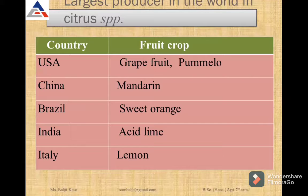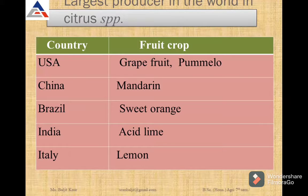These are the countries which are the largest producers of citrus in the world. USA is the largest producer of grapefruit and pomelo. China is the largest producer of mandarin. Brazil is the largest producer of sweet orange. India is the largest producer of acid lime. And Italy is the largest producer of lemon.